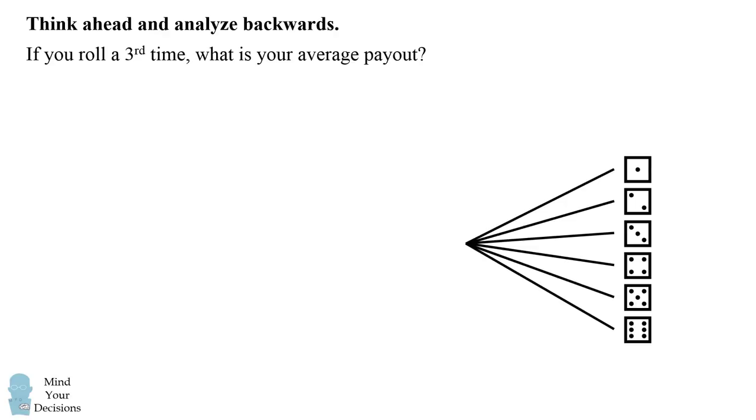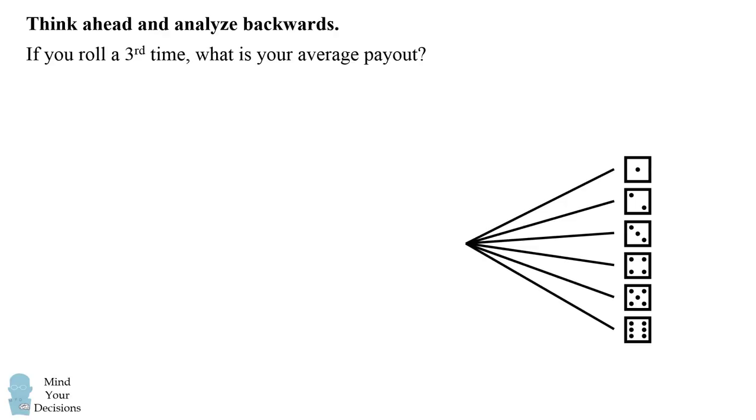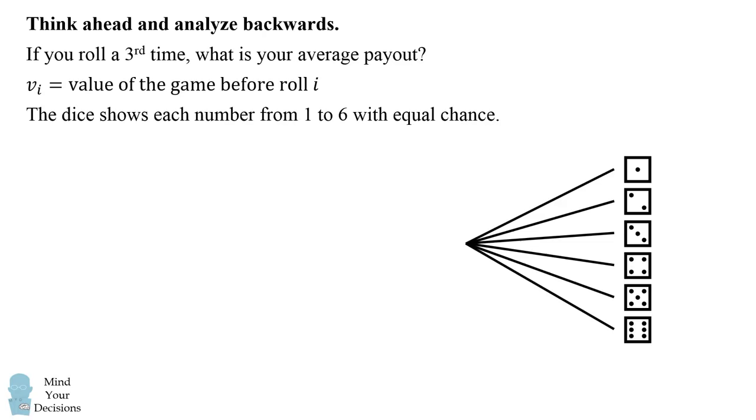Well, if we just focus on this, what would the value be? Let's write vi to be the value of the game before roll i. On the third roll, the dice shows each number from one to six with equal chance. So v3 will be the average of these numbers, which equals 3.5.